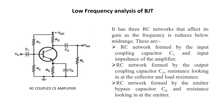Low frequency analysis of BJT. The factors affecting the bandwidth of an RC-coupled amplifier are coupling capacitors C1 and C2, bypass capacitor CE, and internal capacitance of the BJT. The capacitors C1 and C2 are coupling capacitors used for blocking the DC part and allowing only the AC part of the signal to pass through. Reactance of a capacitor is given by Xc = 1 / (2πfc). The capacitive reactance will increase with decrease in frequency and decrease with increase in frequency.